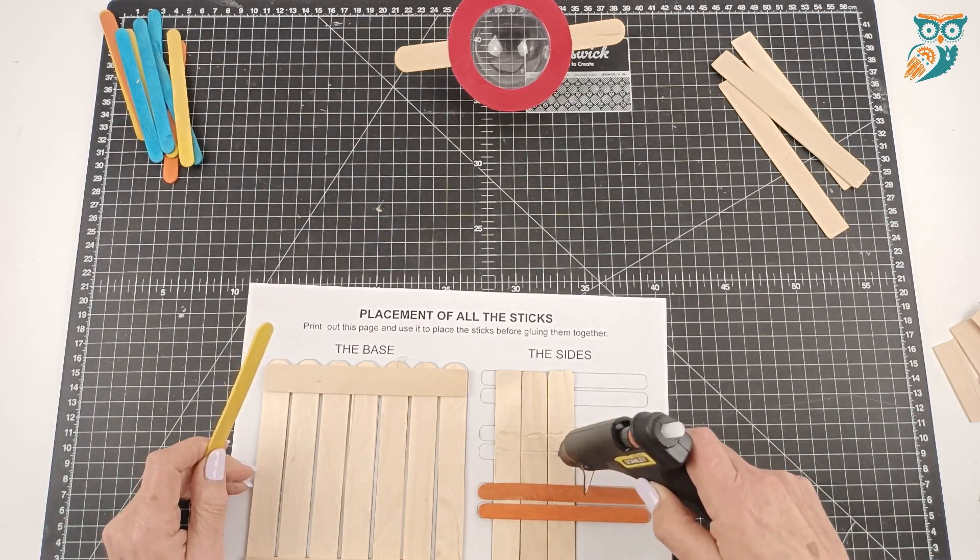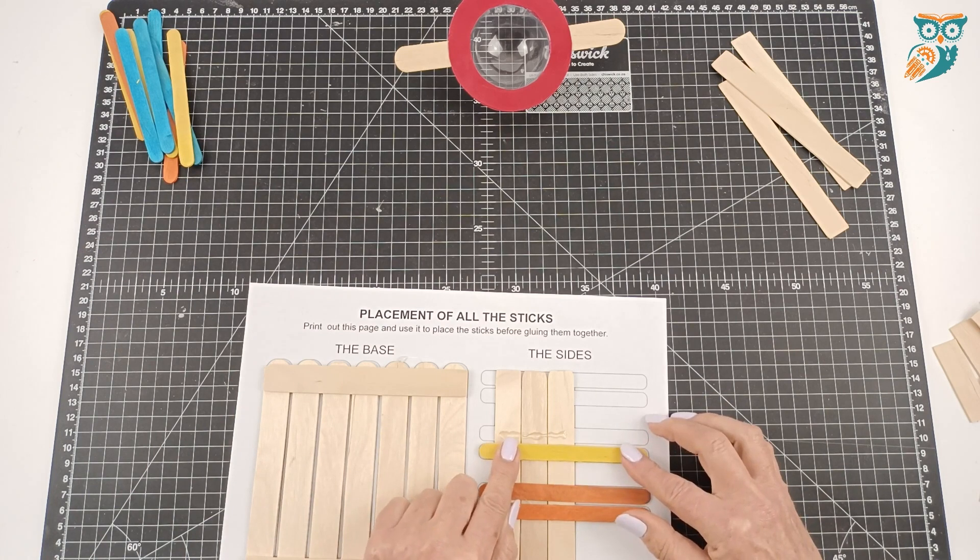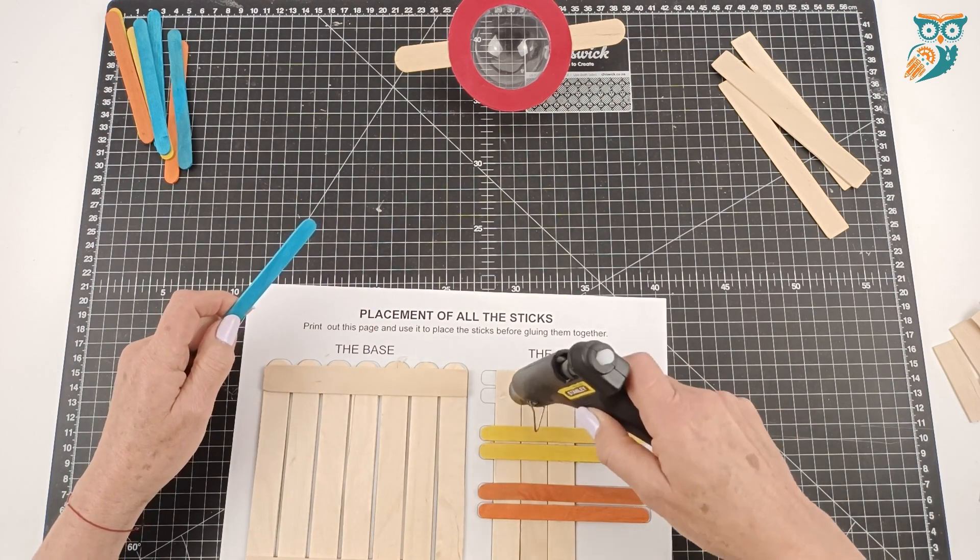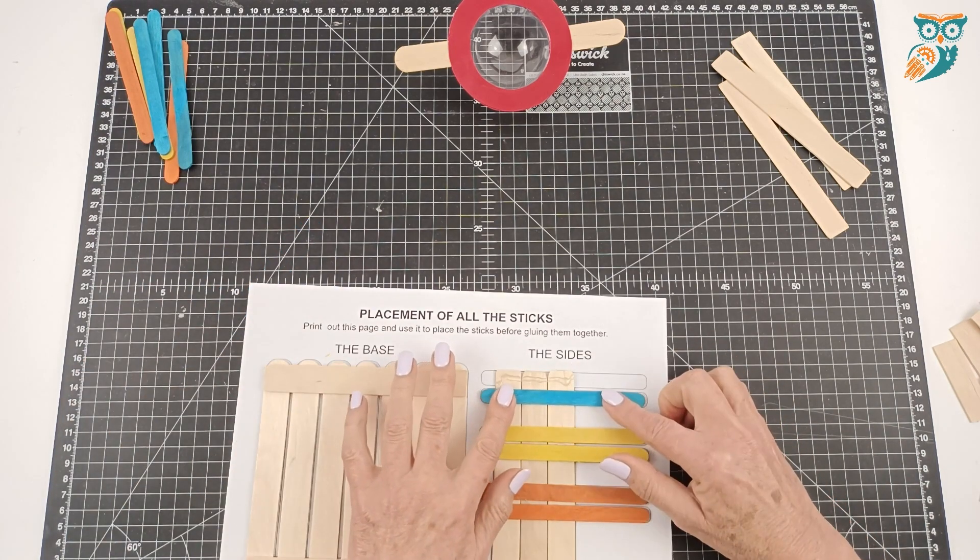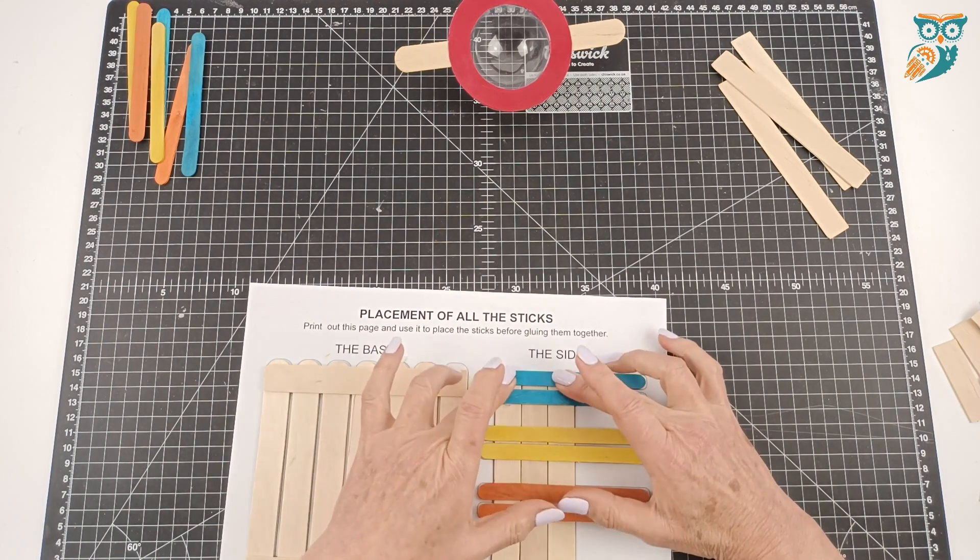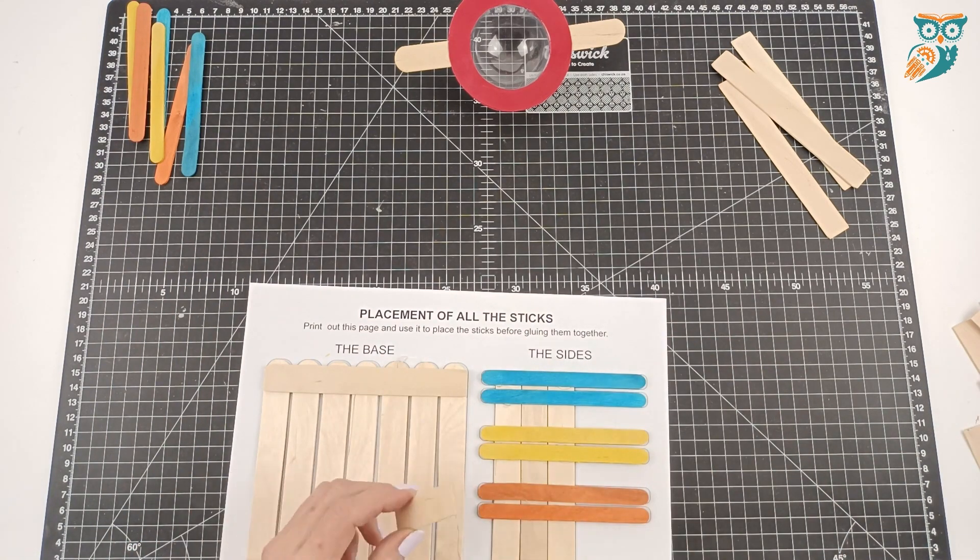With our project, we also decided to color code each level. We're using orange for the lowest level, yellow for the middle level, and blue for the top. Not only does this make the project look nice, it provides a color cue for some children that they might find helpful.